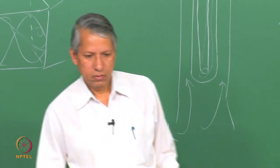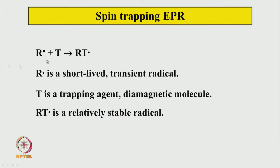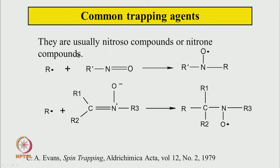Spin trapping EPR: the idea is simple — a transient radical R reacts with a trapping agent to give another species, the trapped radical adduct, which has a sufficiently long lifetime and may be easier to detect. Common trapping agents are often nitroso compounds with an NO group. The radical attacks the nitroso group to form a nitroxide radical, which presumably has a sufficiently long lifetime to be detected. Another type of trapping agent also works similarly — the radical attacks a specific site to produce a detectable radical.